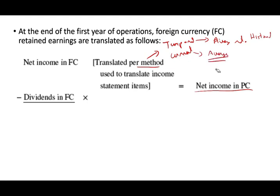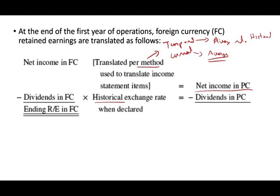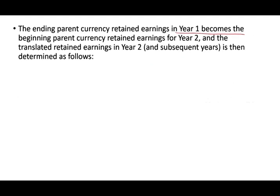So that's why they differ a little bit, but it doesn't matter what the method is. Then we're going to take dividends in the foreign company and translate them at historical rate — so the dividend is translated at historical rate, giving us the dividend in the parent company. Then we have ending retained earnings: net income minus the dividends. This is year one, and the ending parent company retained earnings in year one becomes the beginning parent retained earnings in year two.